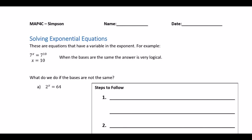Today we're going to be solving exponential equations. An exponential equation is something where you have something on the left side equal to something on the right side, and both sides of the equation usually end up having the same base. Now, if the bases are not the same, then you can't just directly solve it.